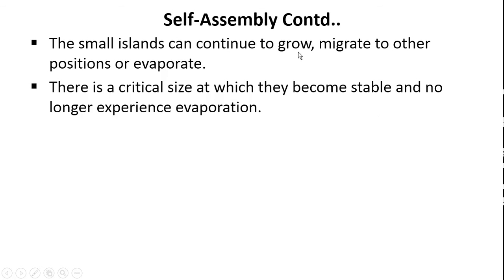The small islands formed can continue to grow, migrate to other positions, or evaporate. There is a critical size at which the self-assembled island becomes stable and no longer experiences any kind of evaporation — the island will exist stably. That is why it is called self-assembly.